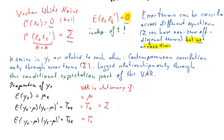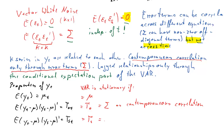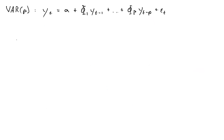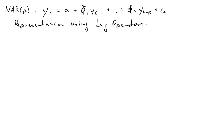The contemporaneous relationship between the yt's will be purely described by the variance-covariance matrix of the error terms. The lagged relationship is going to be some function of the capital phi coefficient matrices, phi 1 through phi p. That can be quite complicated depending on what sort of VAR(P) you have and what order p you have, so we won't go into detail about that here.